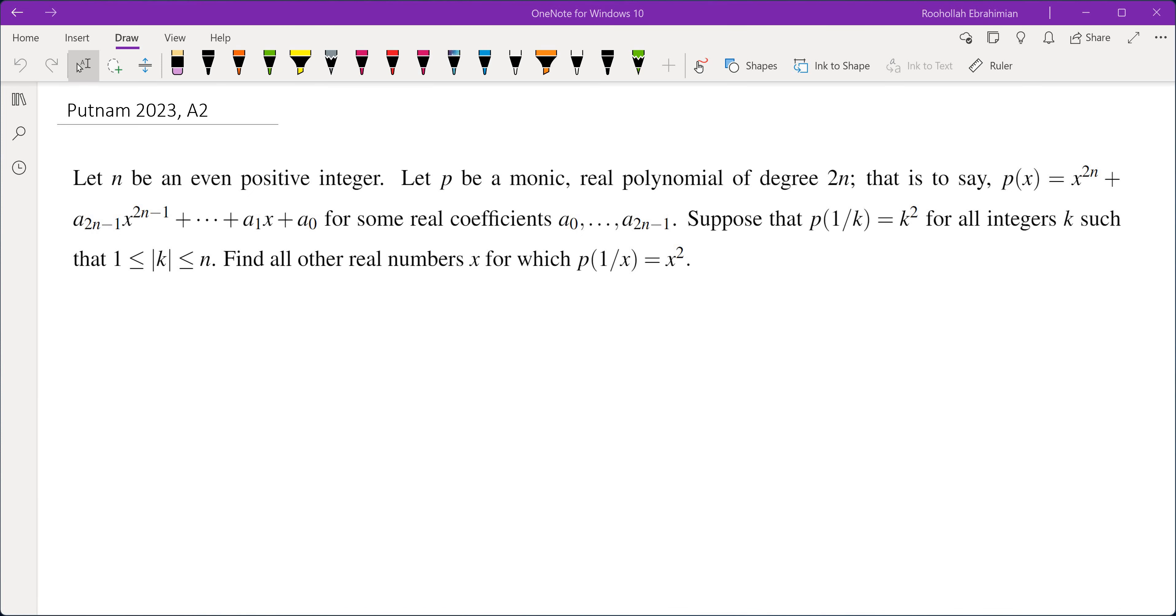Hello, in this video we're going to go over problem A2 from Putnam 2023. Let n be an even positive integer. Let p be a monic real polynomial of degree 2n. Suppose p of 1 over k is equal to k squared for all integers k such that absolute value of k is between 1 and n. Find all real numbers x for which p of 1 over x is equal to x squared.